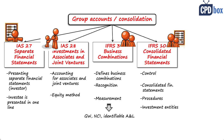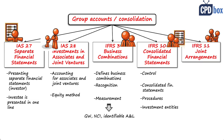Then we have IFRS 11, Joint Arrangements. This standard deals with activities jointly executed by parties. There are two types: joint ventures and joint operations. IFRS 11 defines both and prescribes the accounting treatment for both of them.